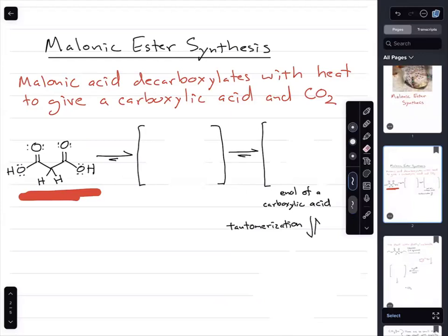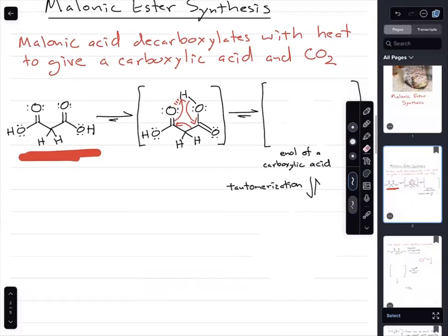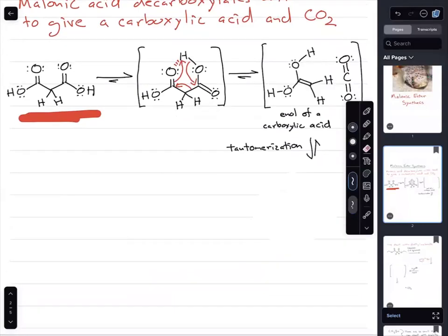Malonic acid can adopt a conformation that also has a six-membered ring. And because of that, it has that very low energy transition state that in the future we're going to call aromatic. And what will happen is it will decarboxylate.